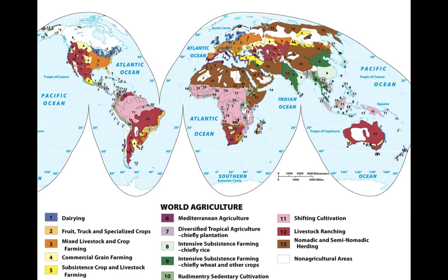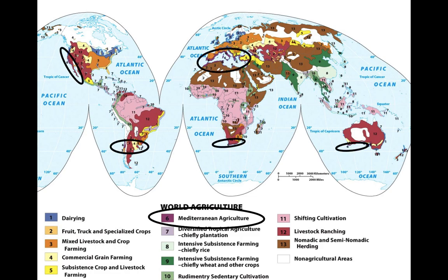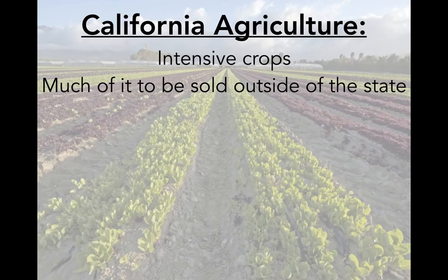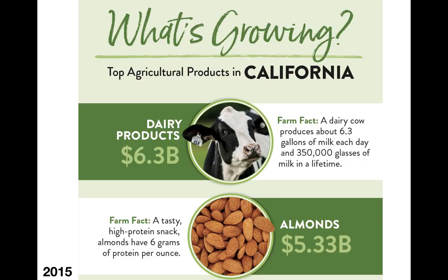The next type of agriculture we're going to discuss is called Mediterranean agriculture. This high-value agriculture is practiced in California, Chile, South America, around the Mediterranean, as well as Australia. The reason it's so important is because of wine grapes and olives — two extremely high-value crops that can only grow in the Mediterranean climate, like we have here in California. Additionally, we have other intensive crops, and much of what we produce is to be sold outside of our state.